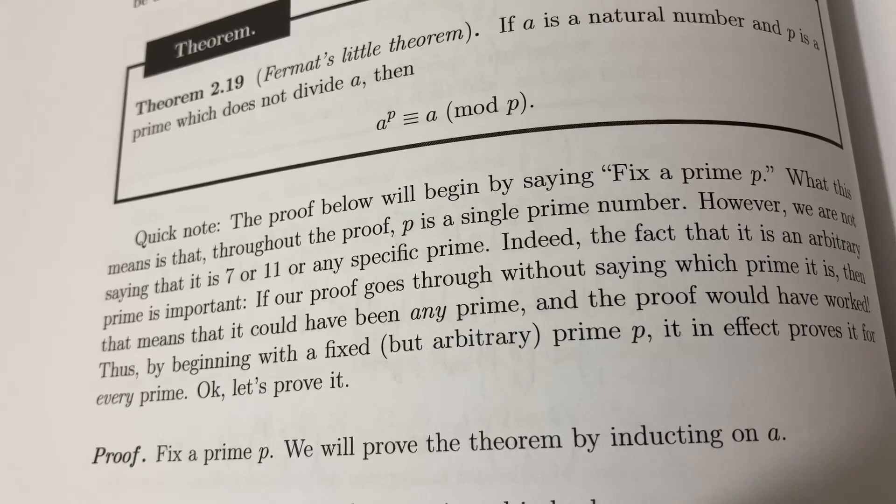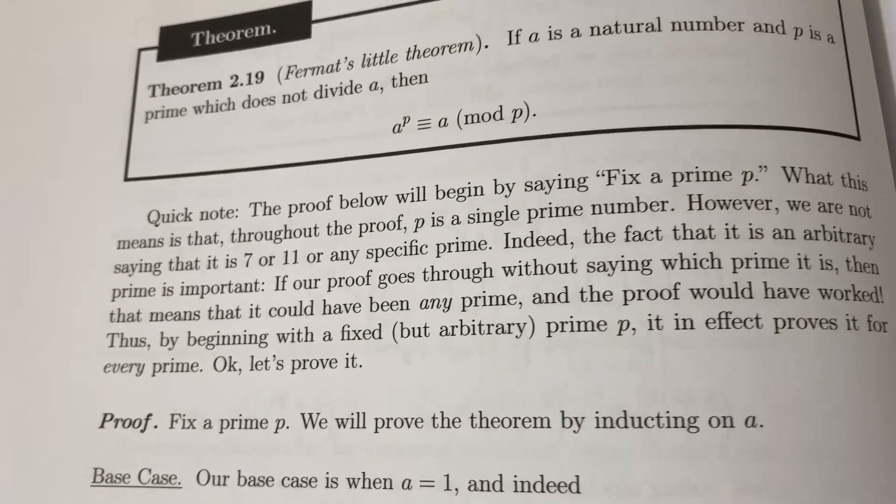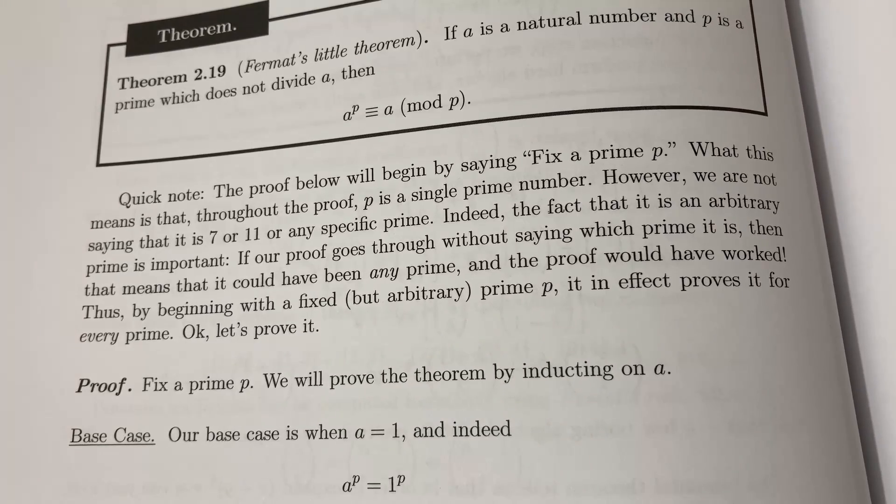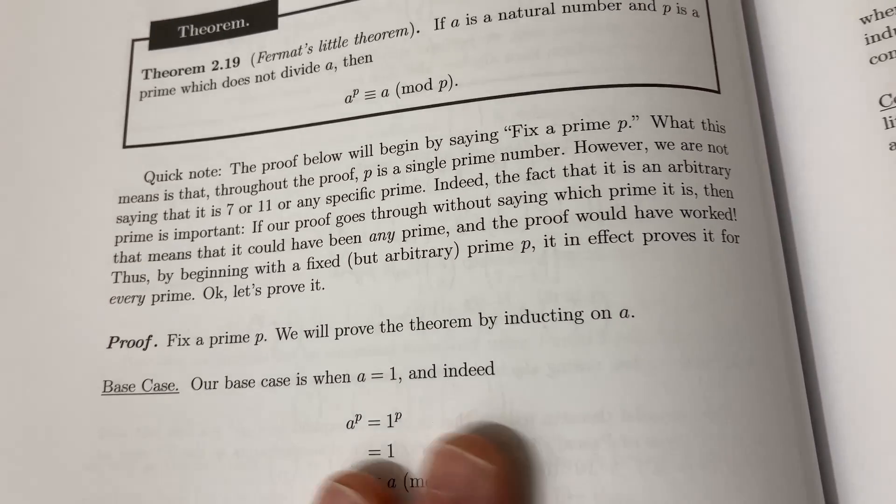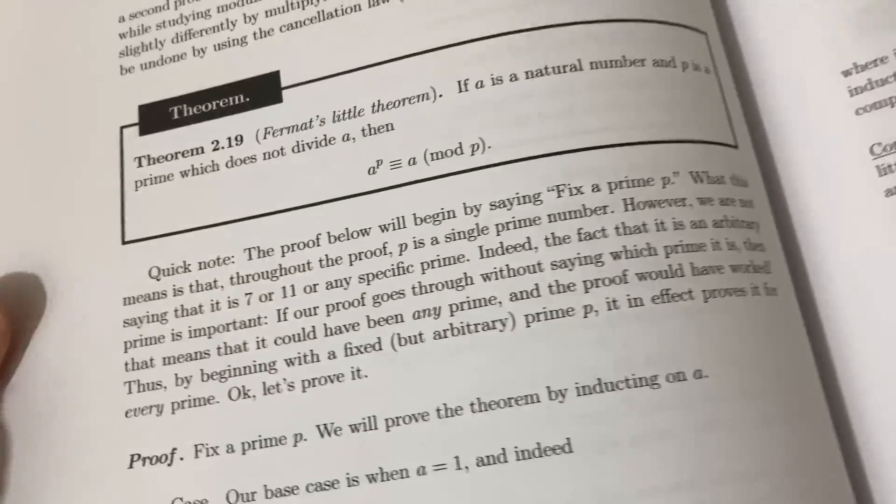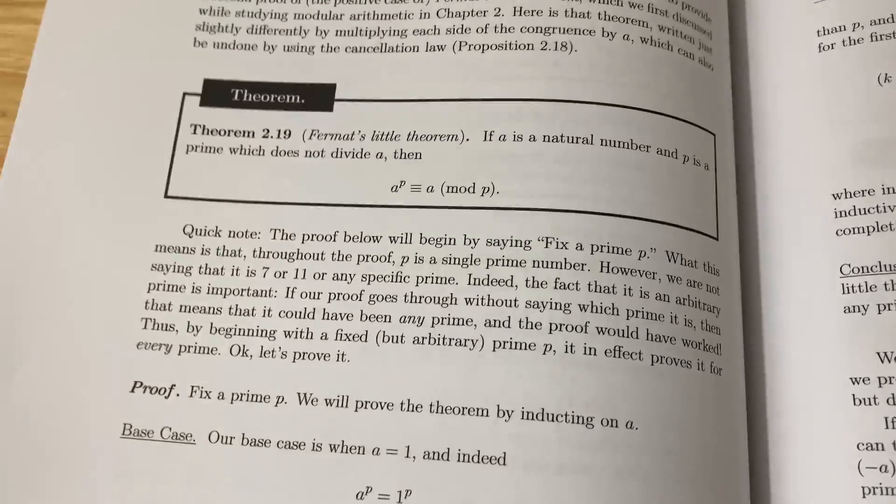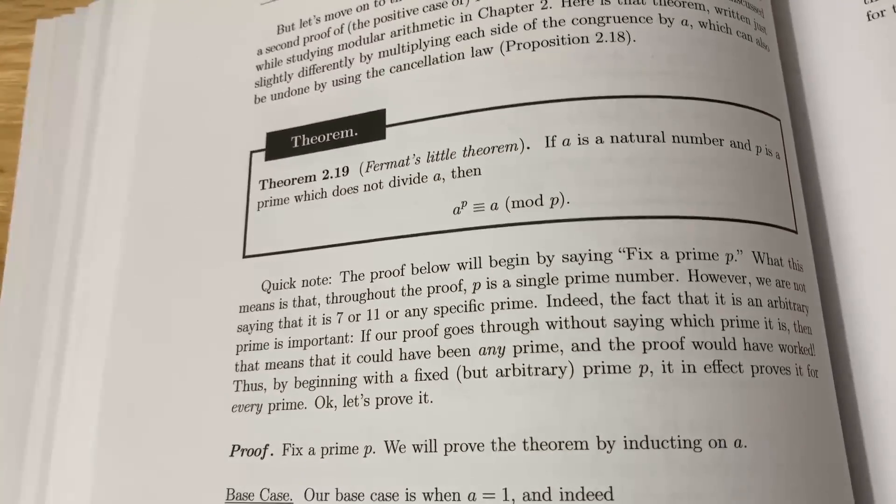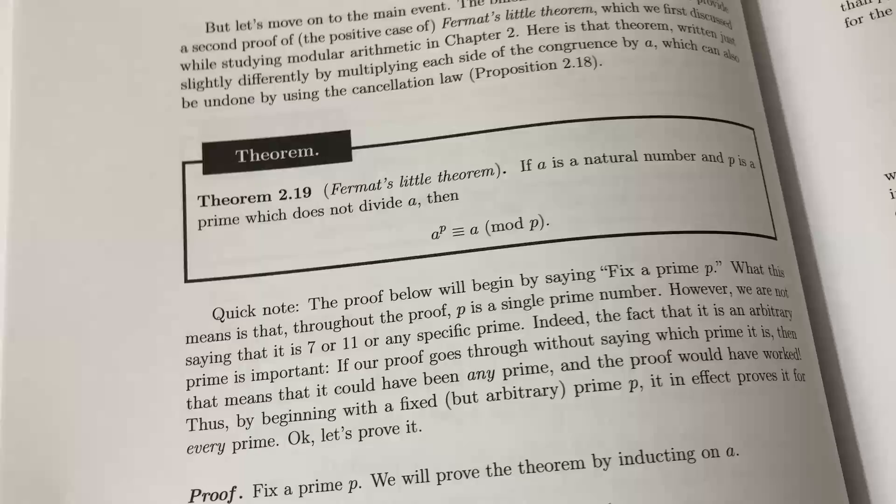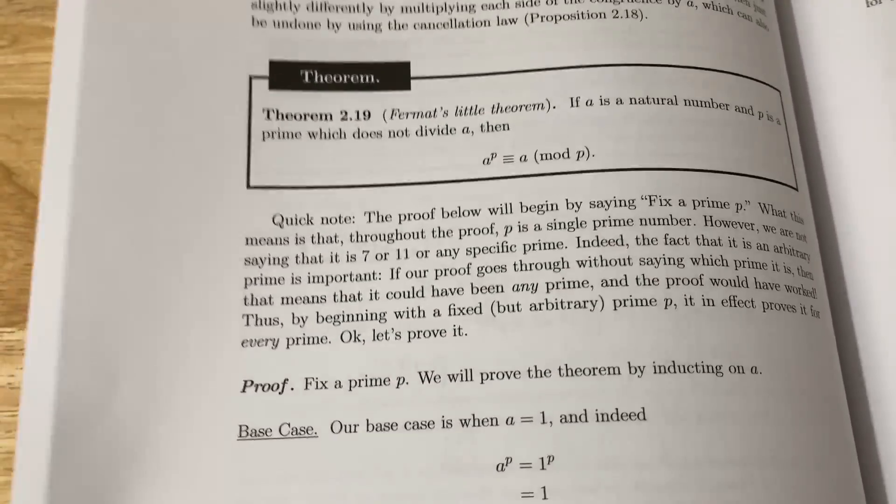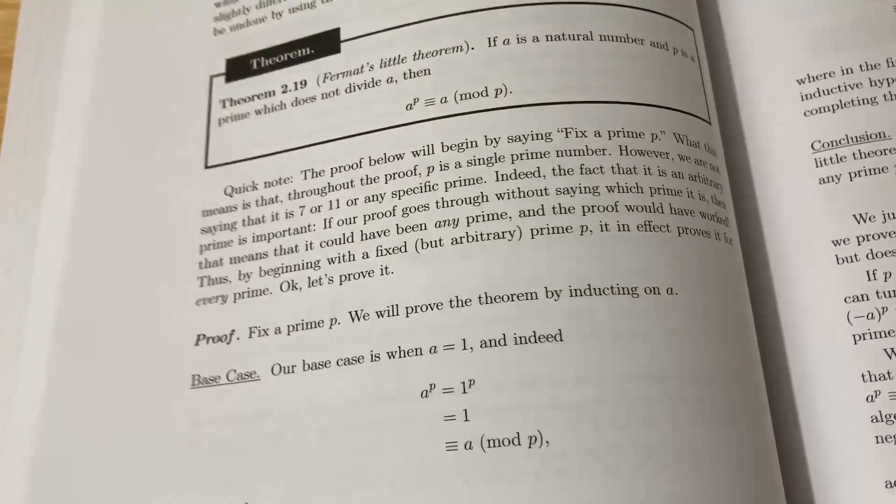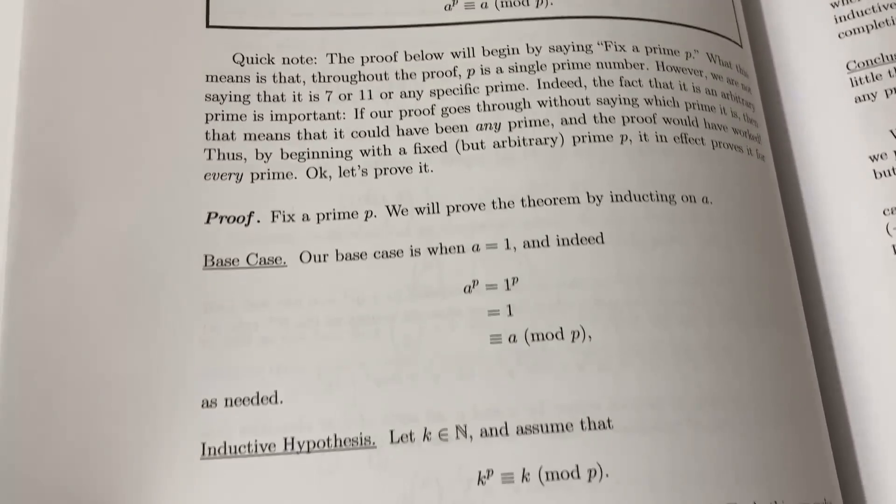However, we are not saying that it is 7 or 11 or any specific prime. Indeed, the fact that it is an arbitrary prime is important. And so, that comment alone right there, at least when I was first learning to write proofs, would have saved me hours of my life. I once spent probably about 6 hours on a very simple linear algebra problem, because I didn't understand what they meant by fix S and T. And Jay clears it up, so this is a great book, and it will clear up confusions, even perhaps before you have them.